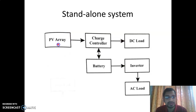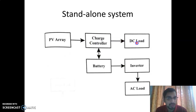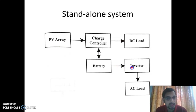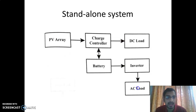The main function of the PV array is to generate electricity in DC form. This DC power is supplied to the consumer's DC loads, and the excess power from the PV array is used to charge the battery. The battery then discharges DC power to the inverter, which converts it into AC power and supplies it to the AC loads.